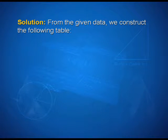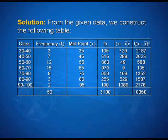Look at the solution now. From the given data, we can construct the following table. First column shows the class intervals. Second column shows the frequency fi, and then we calculate the midpoints xi's as 35, 45, 55, 65, and so on till 95.